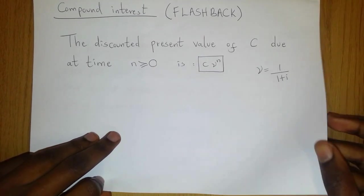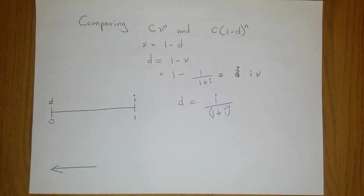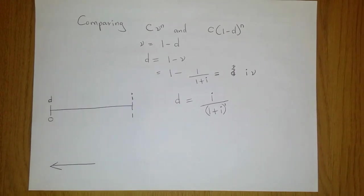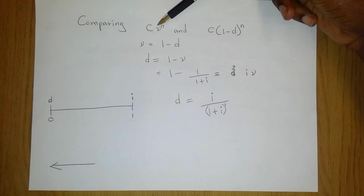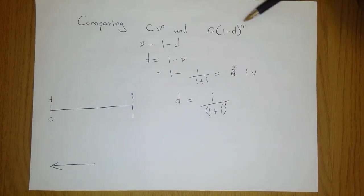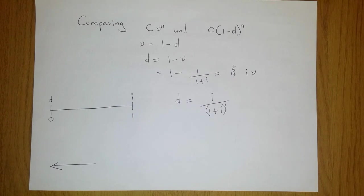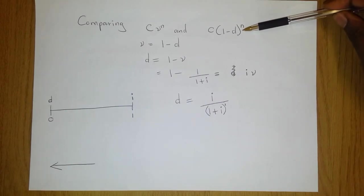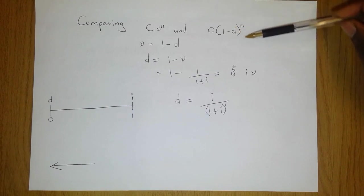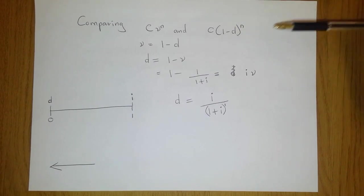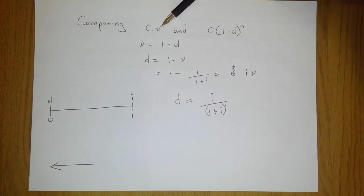Now why am I telling you this? It's because I want us to compare these two formulae. We have this one and we have this one under the compound discount and under the compound interest. Now these two formulae give you an amount C at time N. If you want C at time N under the compound discount model you have to invest this at time 0. If you want to get C at time N under the compound interest model you have to invest this at time 0.